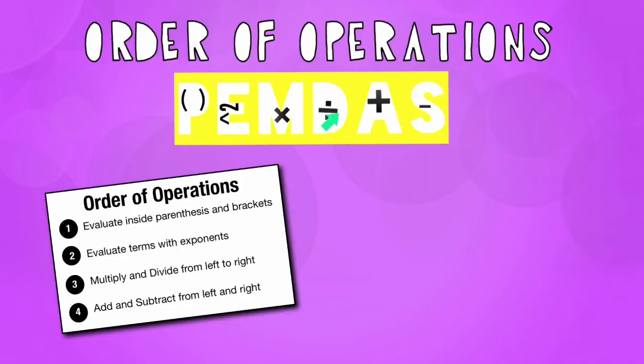Then we get to M and D. I say them together because they stand for multiply and divide. We go left to right with those. So for instance, if there's division first and then multiplication, we would do the division first.